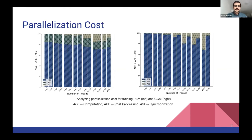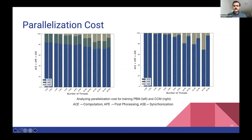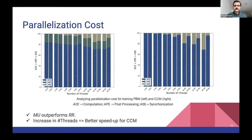We also perform a more in-depth analysis of our parallel processing efficiency. During each EM iteration and task execution, we measure time across three sections: the computation time spent actually processing and estimating model parameters (which ideally should dominate), the post-processing time to avoid increased memory usage, and the synchronization time. Both figures show that the minimum utilization (MU) algorithm outperforms round robin (RR) significantly. Increasing the number of threads for CCM leads to better speedups because CCM is more compute-intensive and therefore benefits more from parallelism.